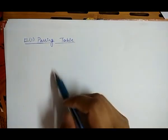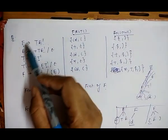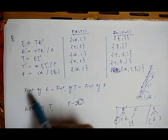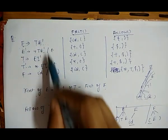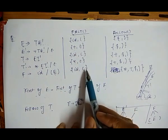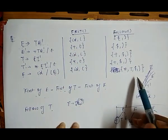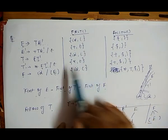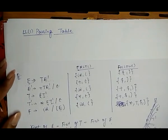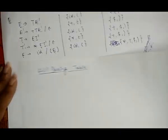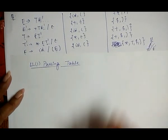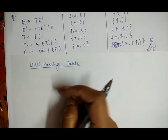Now we create the parsing table. We have a grammar, and in our previous video we already discussed how to calculate FIRST and FOLLOW for this particular grammar. Now, with the help of that, we create the LL1 parsing table for this grammar.